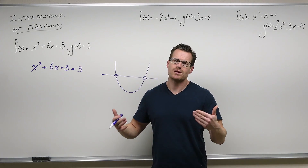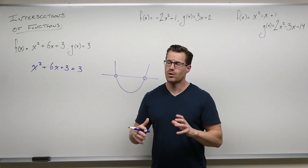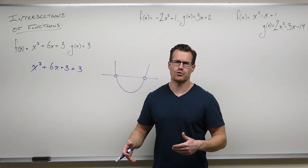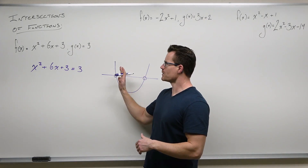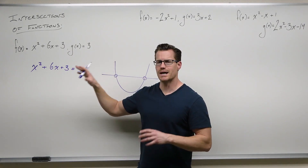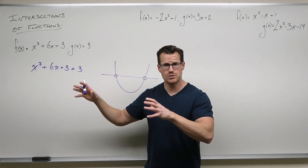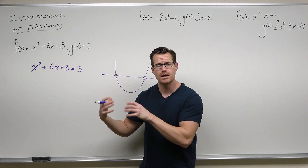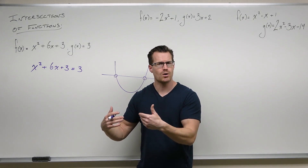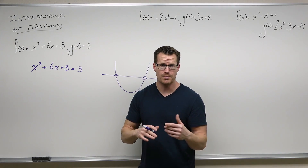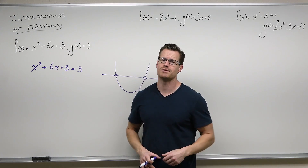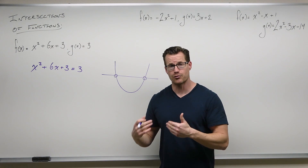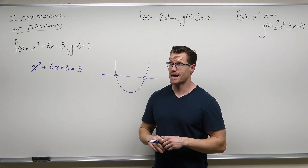Then we try to factor it, or use a square root method, or if we can't do those things, we do the quadratic formula. We want to get everything on one side in order, first term positive, and zero on the other side, so that the zero product property works if we can factor it, or the quadratic formula works if we can't.